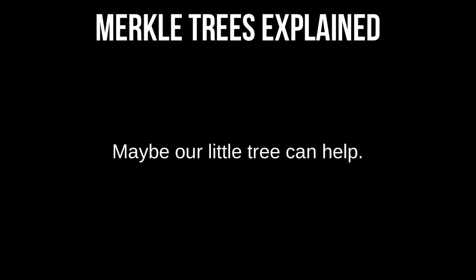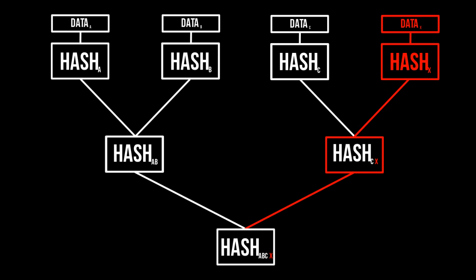So our little tree can help. We're looking for the bad data and don't know which chunk is bad. The first thing we do is check the hashes. We know the root is incorrect. We go back and check: is hash AB correct? It was. If hash AB is correct, we know the error is on the other side of the tree. That side is perfectly fine, this side has a problem. We've already eliminated about half the possibilities. We know hash CX is wrong — we wanted hash CD. Then we just test data C and data X, and we find data X was wrong. That's where the problem was.